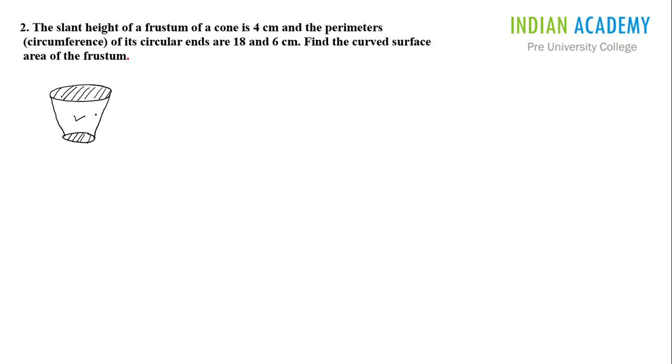And this one is the curved surface. Our job is to find the area of this curved surface. So let's look at the notations. We will take the radius of the top circle as r1, radius of the bottom circle as r2.